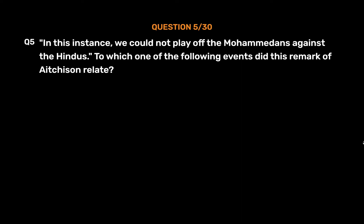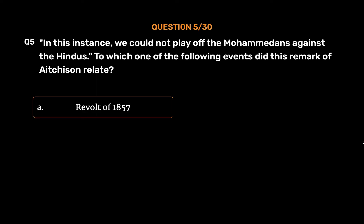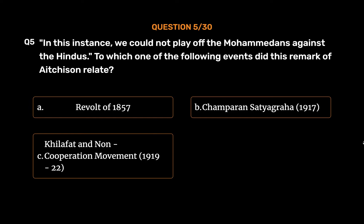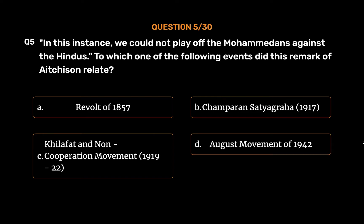Question No. 5. 'In this instance, we could not play off the Mohammedans against the Hindus.' To which one of the following events did this remark of H.S.N. relate? Option A: Revolt of 1857. Option B: Champaran Satyagraha, 1917. Option C: Khilafat and Non-Cooperation Movement, 1919-22. Option D: August Movement of 1942. The correct answer is Option C: Khilafat and Non-Cooperation Movement, 1919-22.